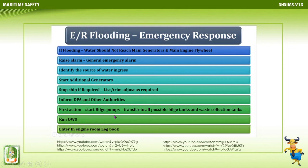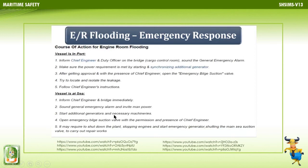If flooding happens in port, inform the chief engineer and duty officer on the bridge, and in the case of tankers, the cargo control room, and raise the general emergency alarm. Start the additional generator. With the chief engineer present, he will open the emergency bilge section valve and try to pump out the bilges. Try to locate and isolate the leakage and follow the chief engineer's orders. If the vessel is at sea, open the emergency bilge suction valve after the chief engineer's or master's permission.